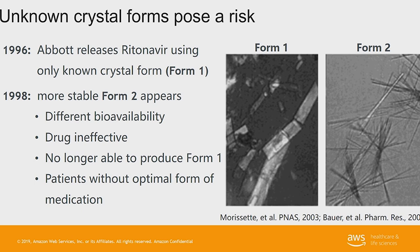It was a major disaster, but fortunately for patients you could still get the molecule through a liquid dosage. They were actually putting it in little plastic tablets to swallow because it tasted so bad — it was not what Abbott had hoped to achieve. It took at least five years of scientists looking to find a new way to manufacture this drug. In that time, they actually found five more crystal forms of Ritonavir that they really should have been able to know about ahead of time, but just couldn't know.